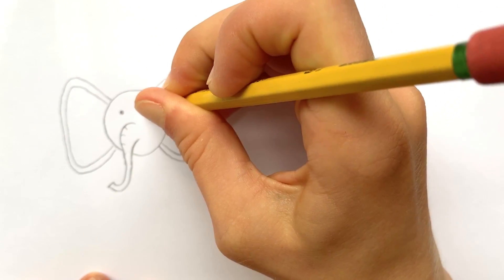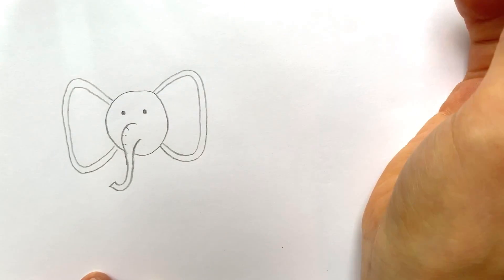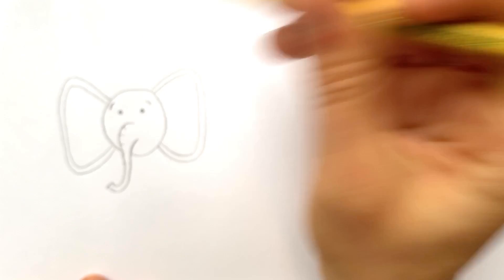Then we'll give him eyeballs. You can do eyebrows like we did on the dog too - eyebrows just give him a little expression, which I think is always fun.